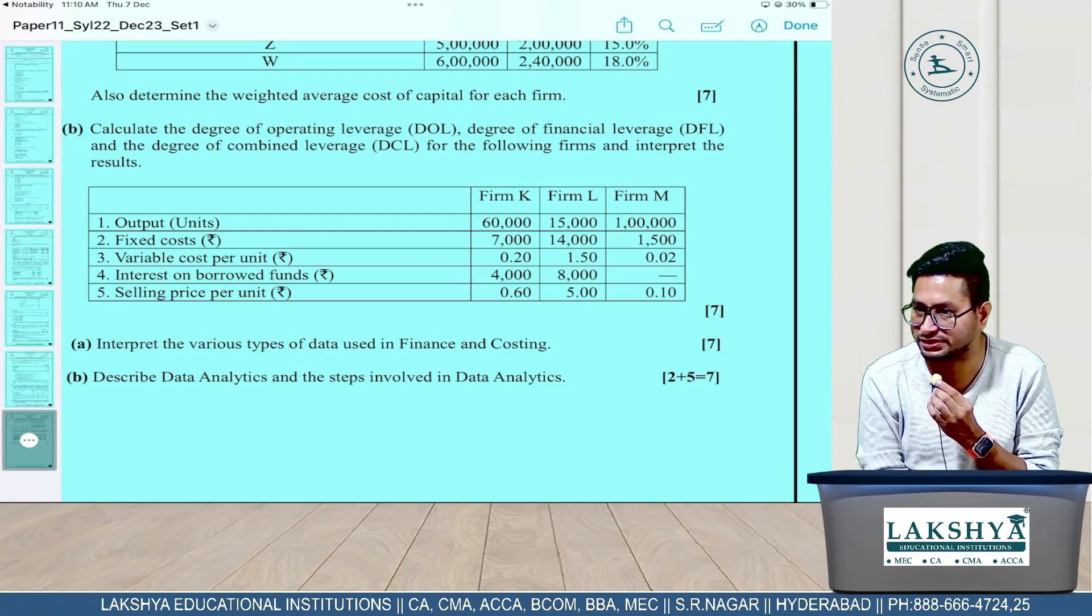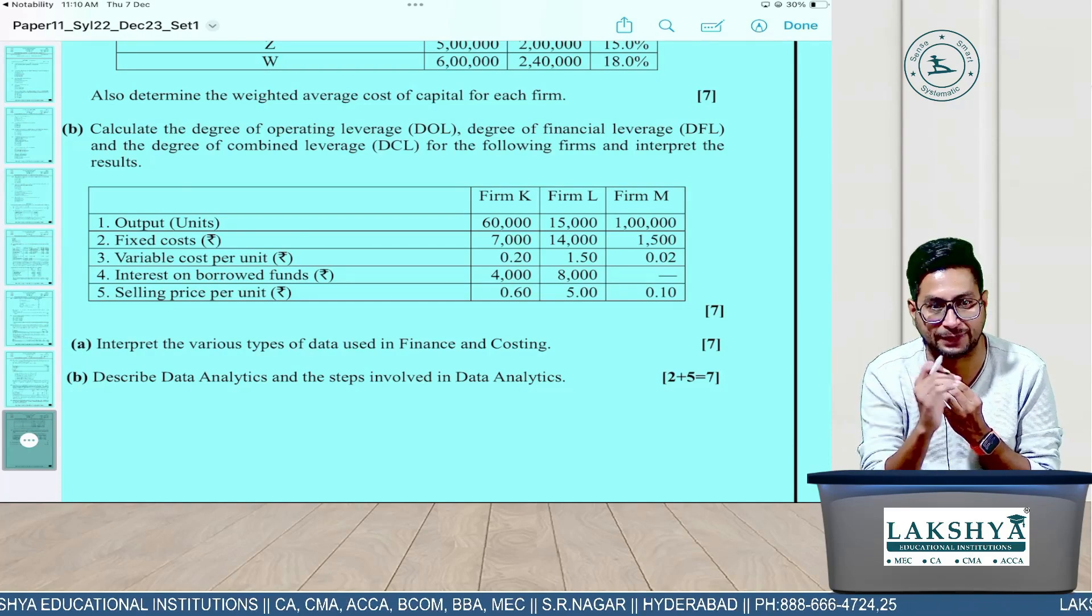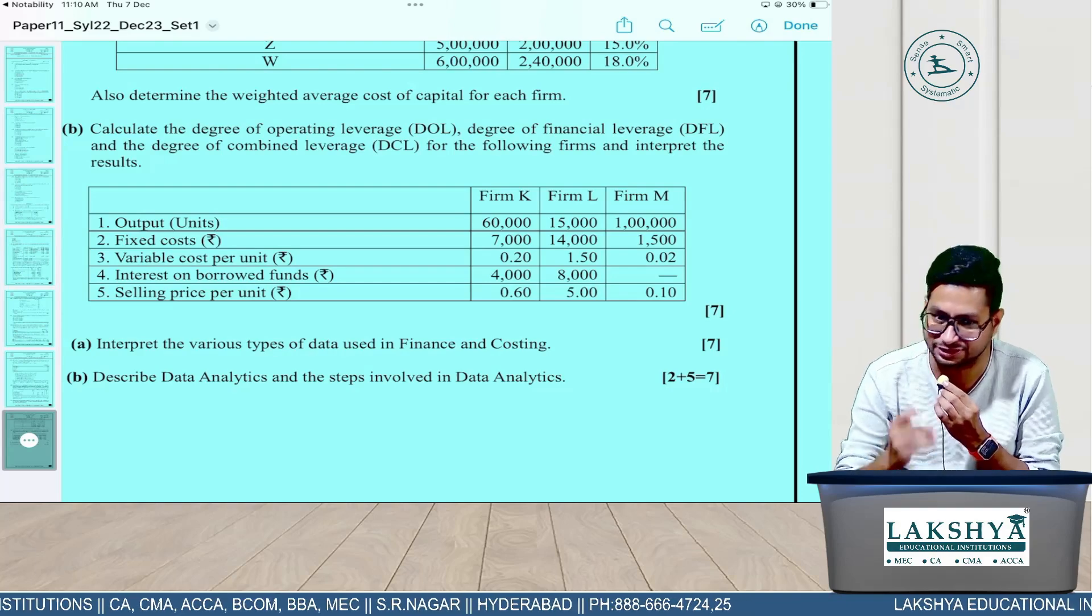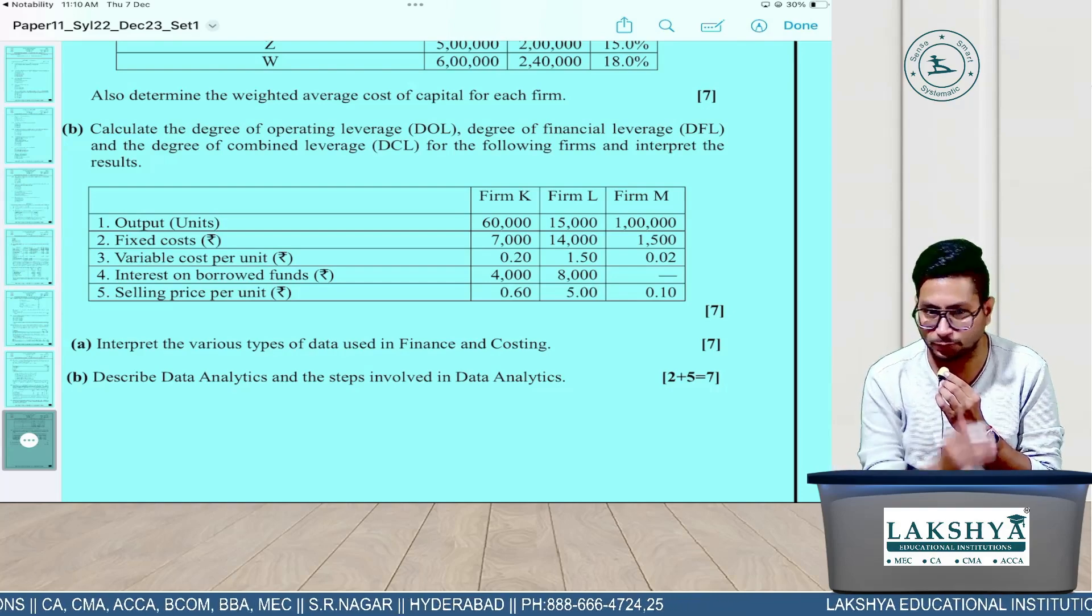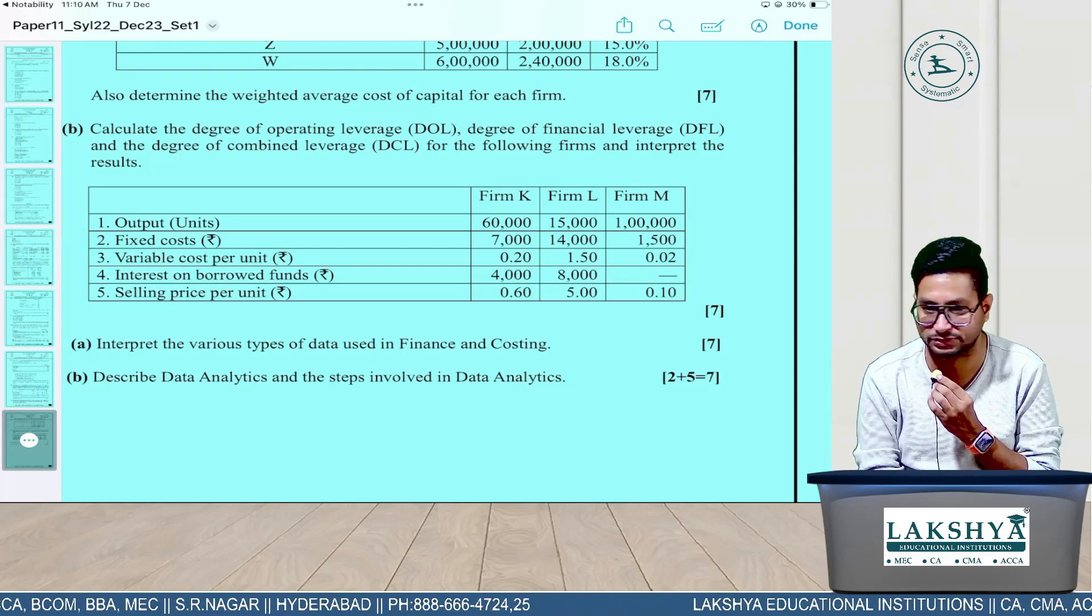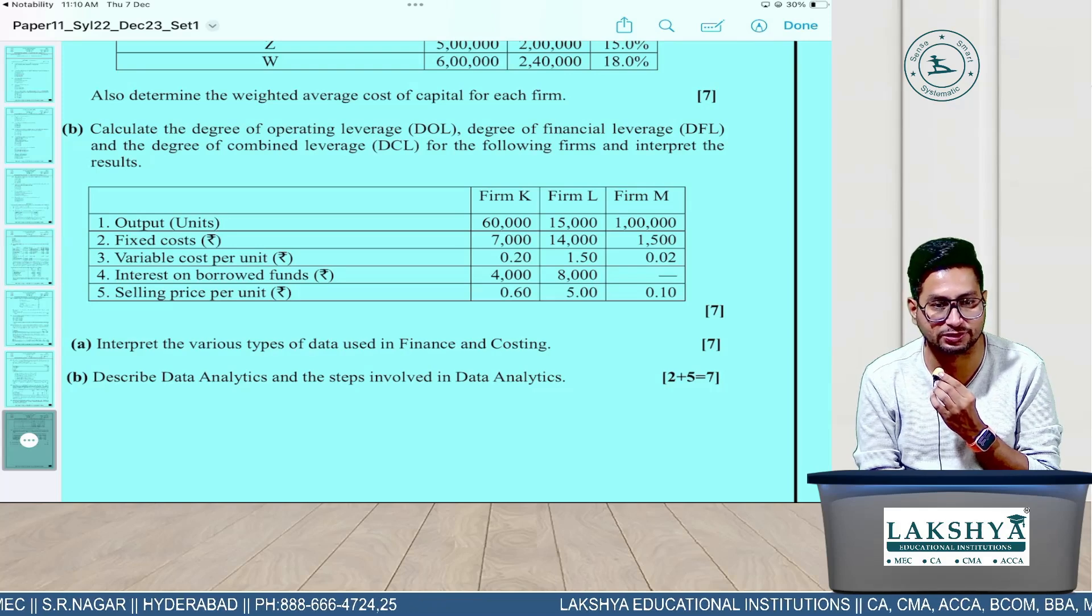Preparation - what you can do is start from chapter one. Every chapter has equal importance. Chapter one is the smallest chapter - finish that. Then chapter three, then chapter two, and then chapter four. Smallest to largest chapter - finish in that way and you can finish your syllabus fast. This was the preparation strategy for twenty marks of data analytics.